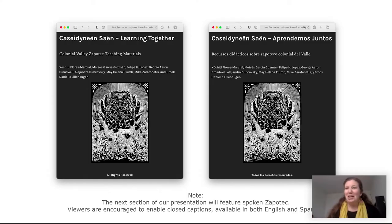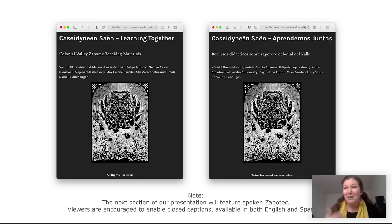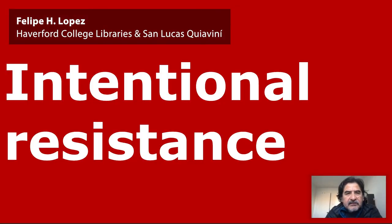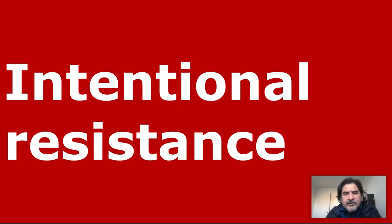The resulting online open-access resource is available now in English and Spanish, and it's developed with high school and undergraduate audiences in mind. We hope that some of you listening might be inspired to use some of the chapters in your courses. And if you do, please give us feedback so we can continue to refine them. I will be talking a little bit about the intentional resistance, but before I talk about the role of activism in developing Kasei Neon Satin, I want to tell you a little bit about its content.